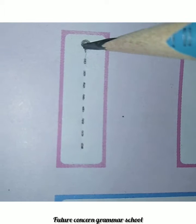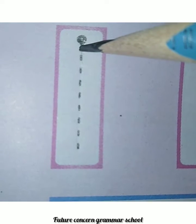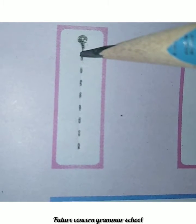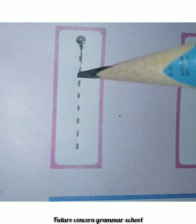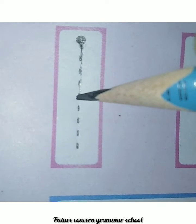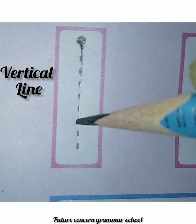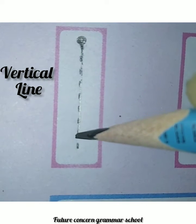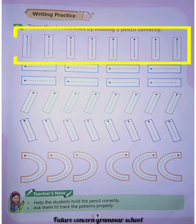We start from this point and complete the line. This line is called a vertical line. We have traced all the vertical lines.